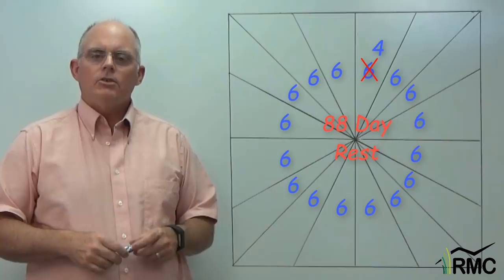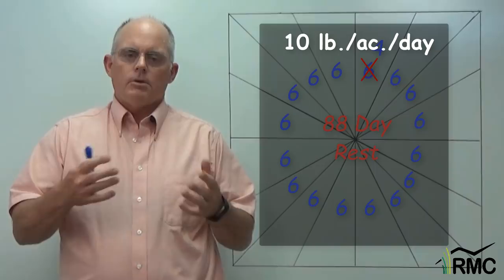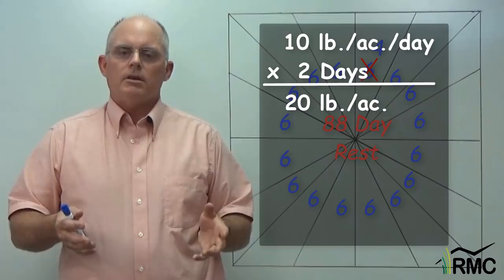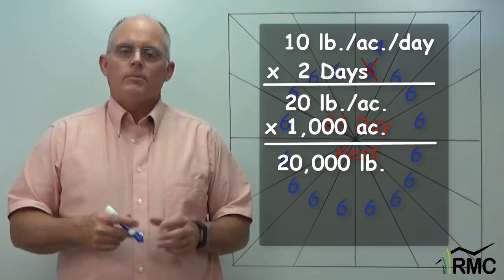If slow growth is 10 pounds per acre per day, and that is very slow growth, two days is about 20 pounds per acre. Over 1,000 acres, that's 20,000 pounds of forage.